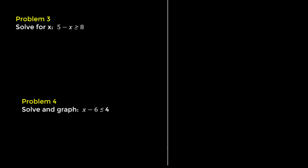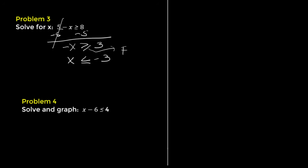Problem 3. Solve for x: 5 minus x is greater than or equal to 8. Subtract 5 from both sides. Positive 5 and negative 5 cancel, giving negative x is greater than or equal to 3. Multiply both sides by negative 1 and flip the inequality sign. The solution is x is less than or equal to negative 3.